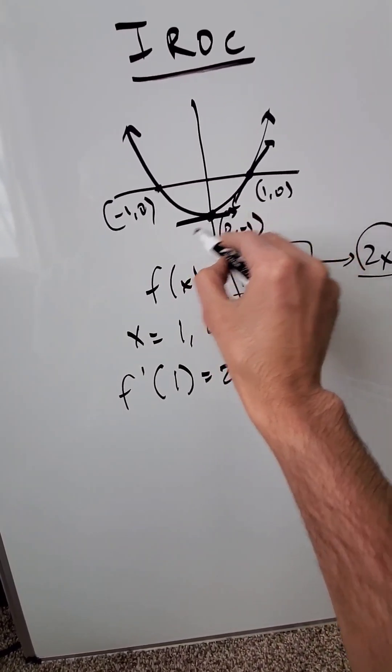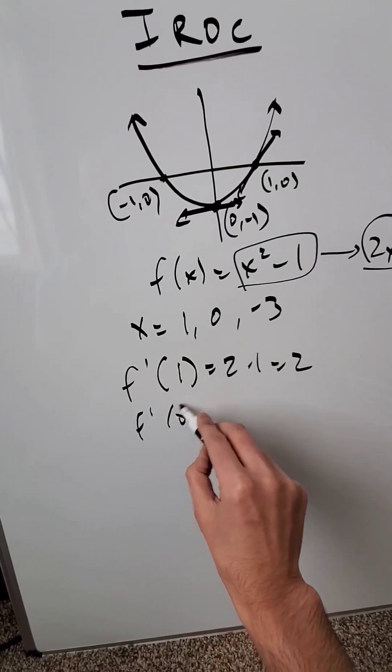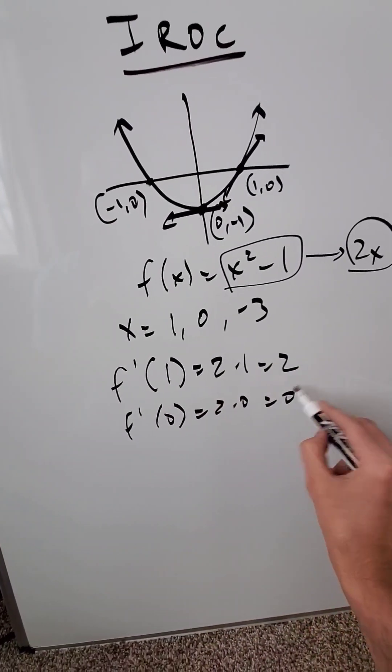What about right here? It's going to be horizontal tangent line. You'll see it to be the case. 2 times 0 is 0, slope of 0.